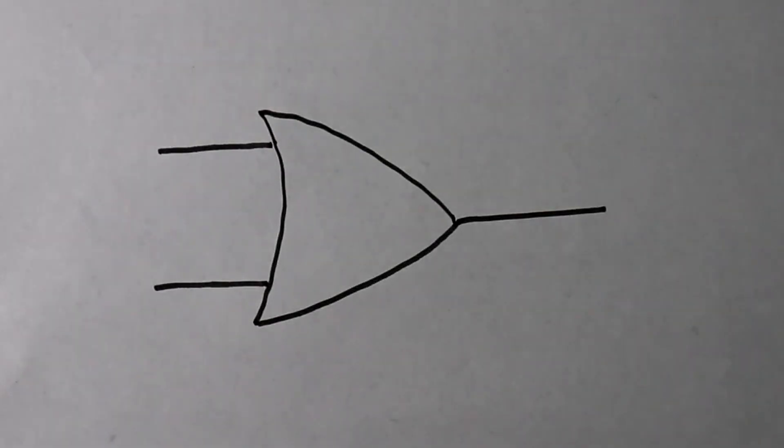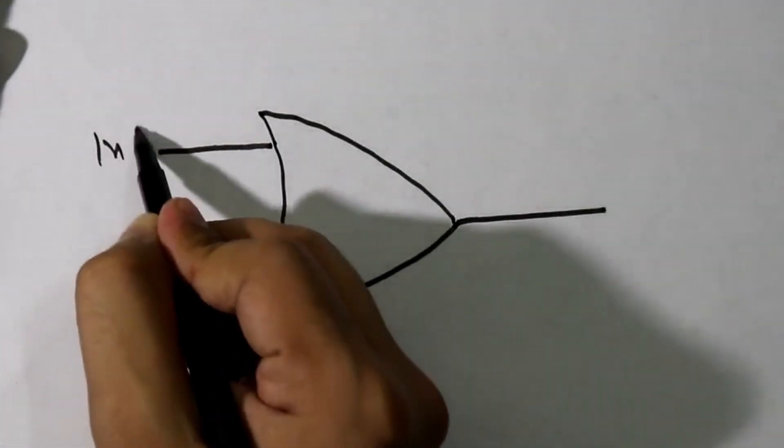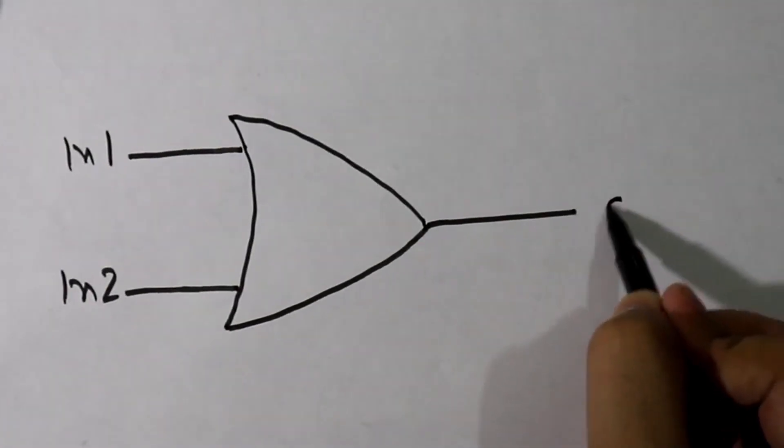So this is the symbol of OR gate. Here input 1, input 2 and here output.